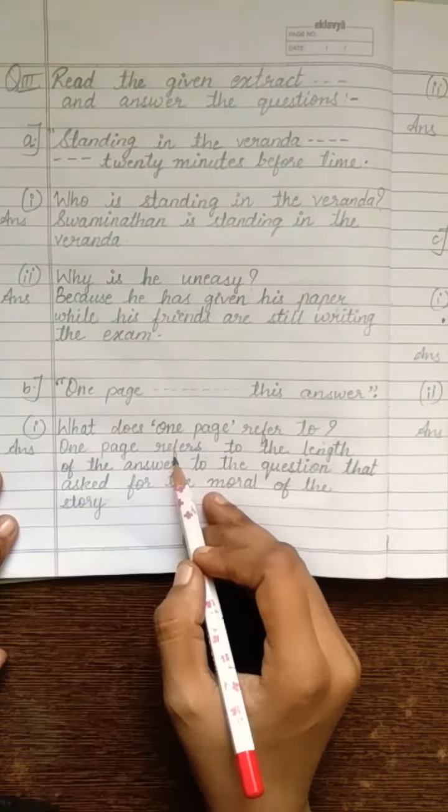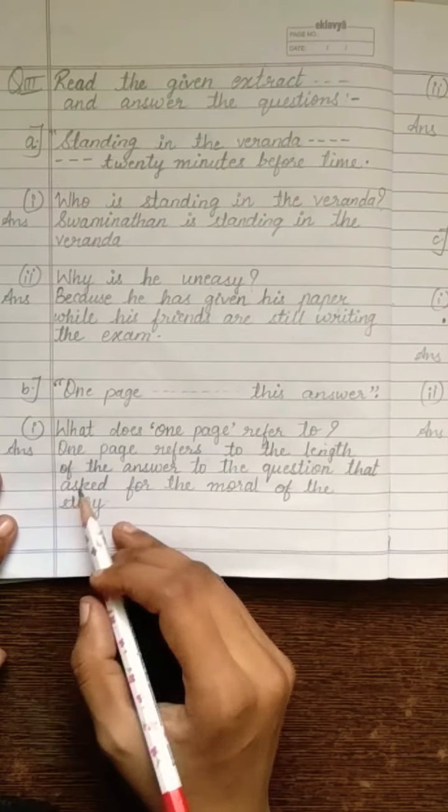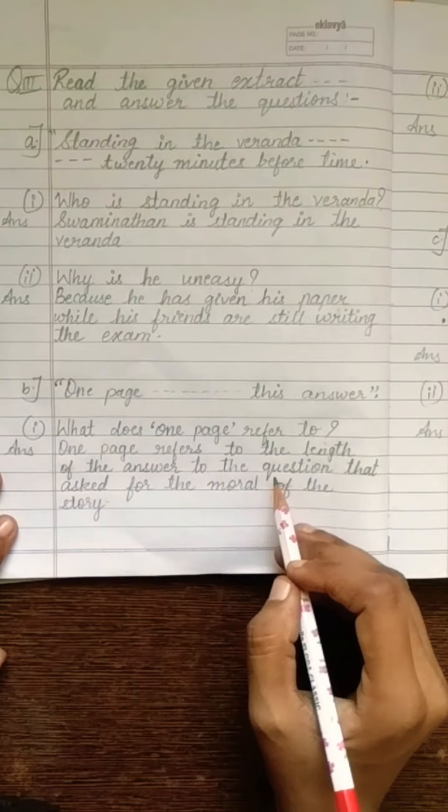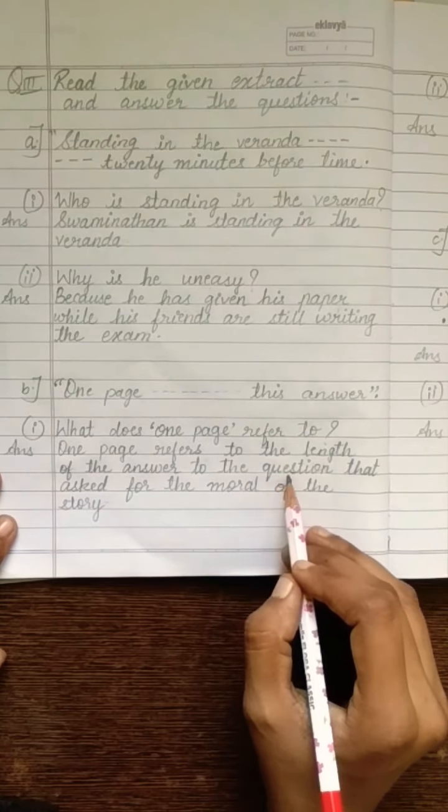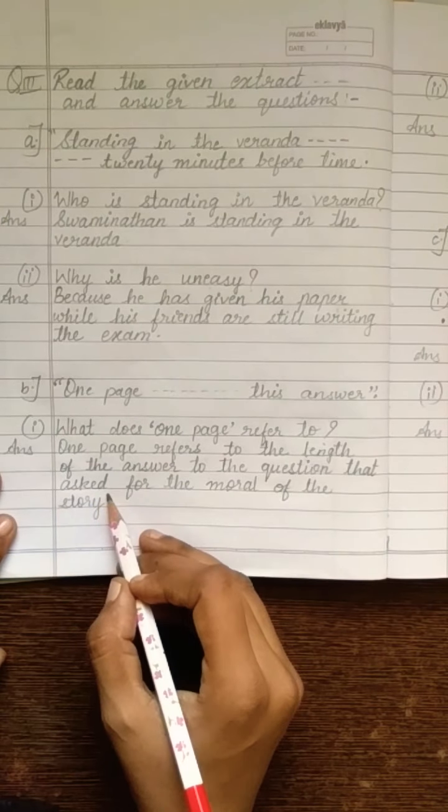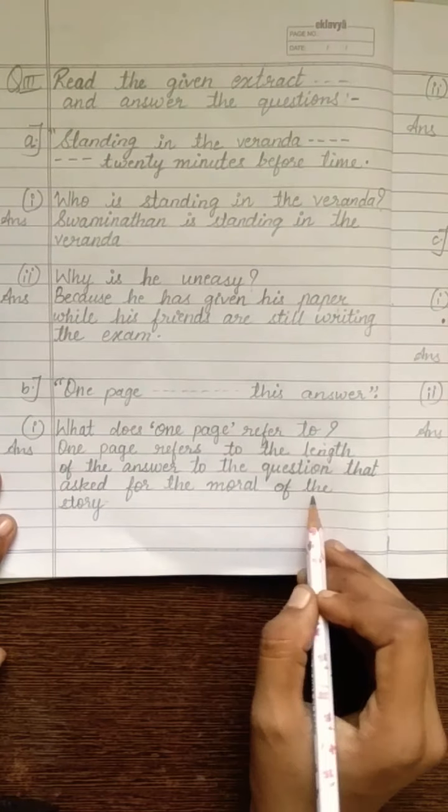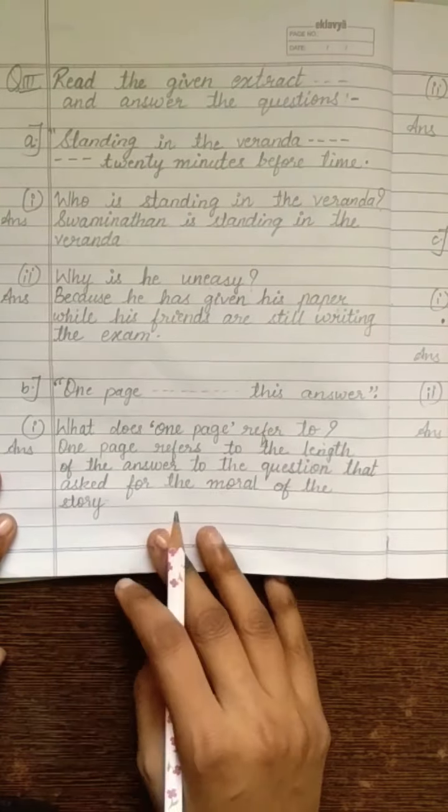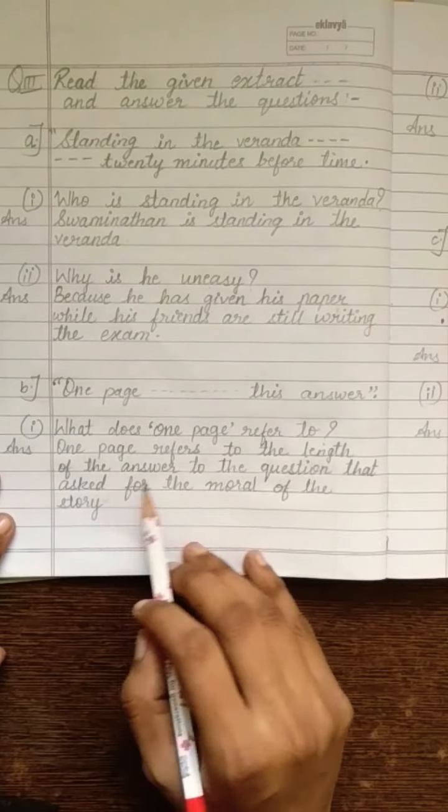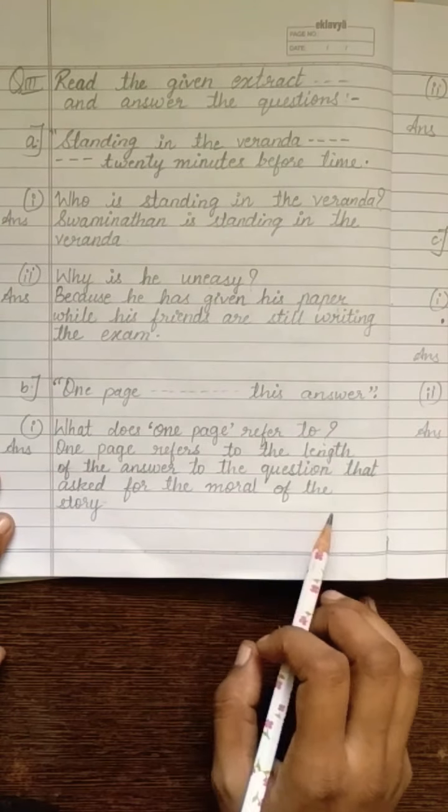So, repeat. One page refers to the length L-E-N-G-T-H length. Of the answer A-N-S-W-E-R answer to the question Q-U-E-S-T-I-O-N question that A-S-K-E-D asked for the M-O-R-A-L moral of the S-T-O-R-Y story. Understood? One page refers to the length of the answer to the question that asked for the moral of the story.